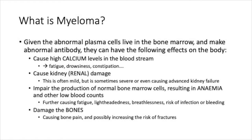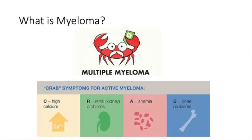We use a particular acronym to refer to what we call the end organ dysfunction — or damage to the body — resulting from myeloma. That acronym is CRAB: C for high Calcium, R for Renal or kidney impairment, A for Anaemia, and B for Bone problems. It's a relatively easy one to remember.